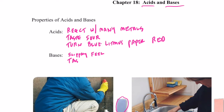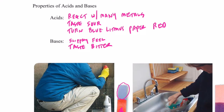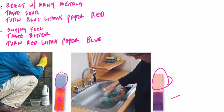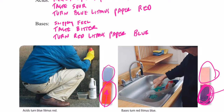Another property — and once again I don't want you tasting a bunch of bases — but bases taste bitter as opposed to sour. If you've ever tasted soap before, it's a bitter taste. And then the other property I want to list for bases is that they turn red litmus paper blue. So if red litmus paper comes in contact with a base, it turns blue. And once the red turns blue, that portion is now considered blue litmus paper. If it then comes in contact with an acid, it will turn red again — and we'll demonstrate that in class.